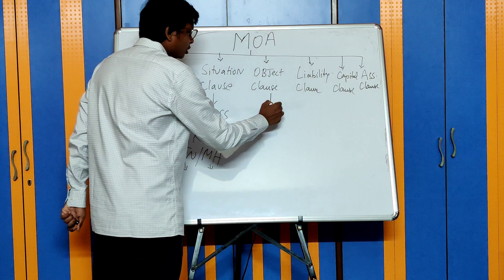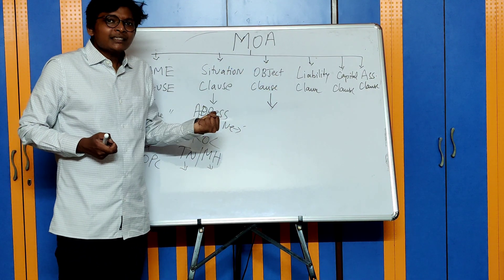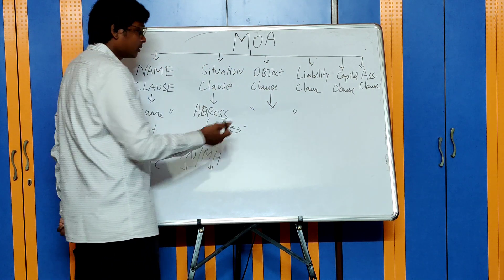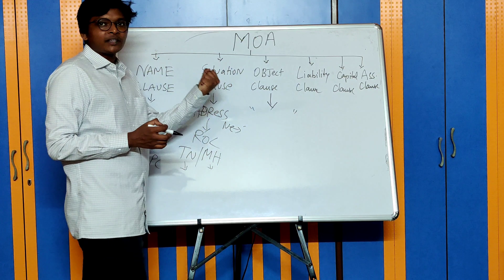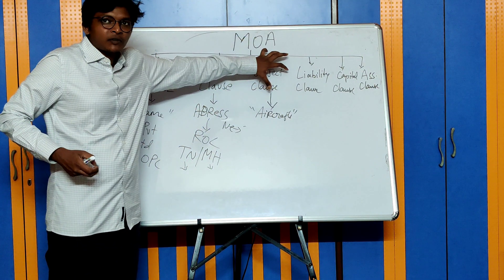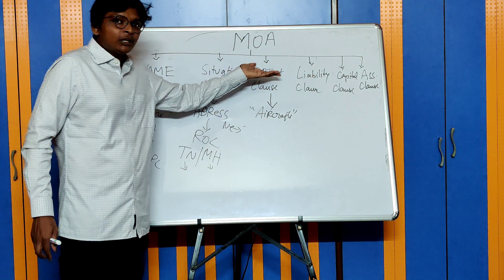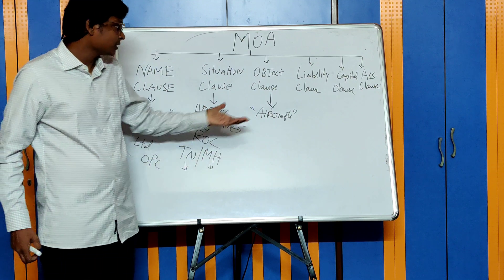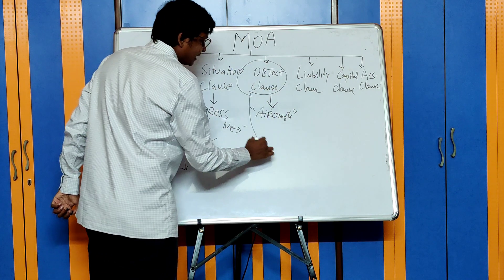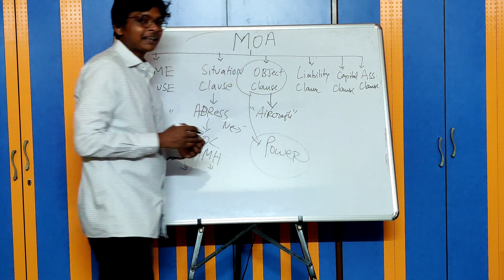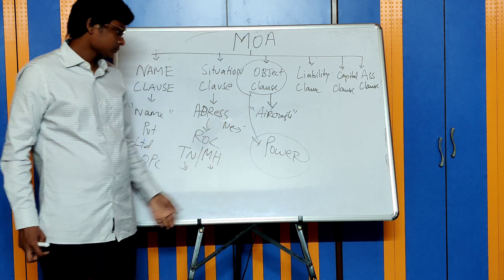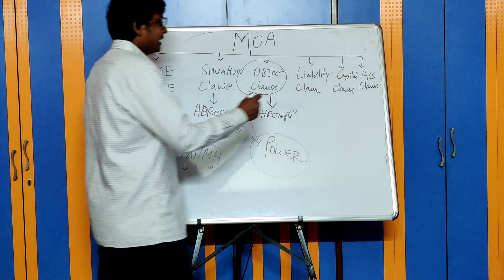Next is the Object Clause, which talks about the purpose of the company. For example, Indigo Airlines — the main object of Indigo is air travel. Can they do any other business? Can Indigo get into the restaurant business tomorrow? They can do it only if the Object Clause grants that power. Basically, the Object Clause gives power to a company to do any transaction. A company cannot do any business not mentioned in the Object Clause — any such activity is ultra vires.